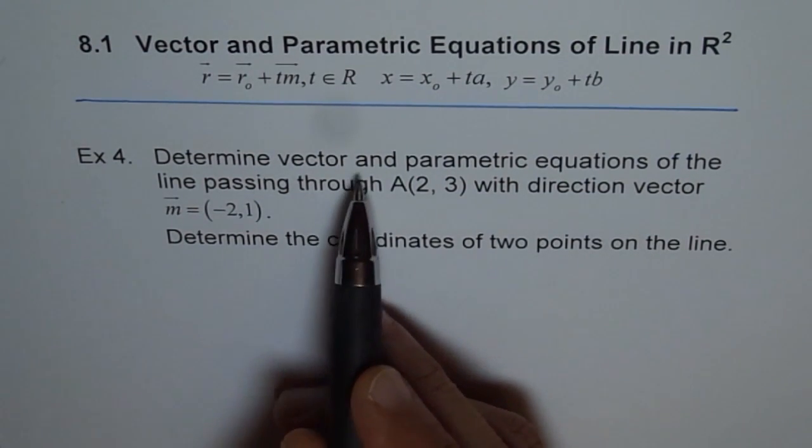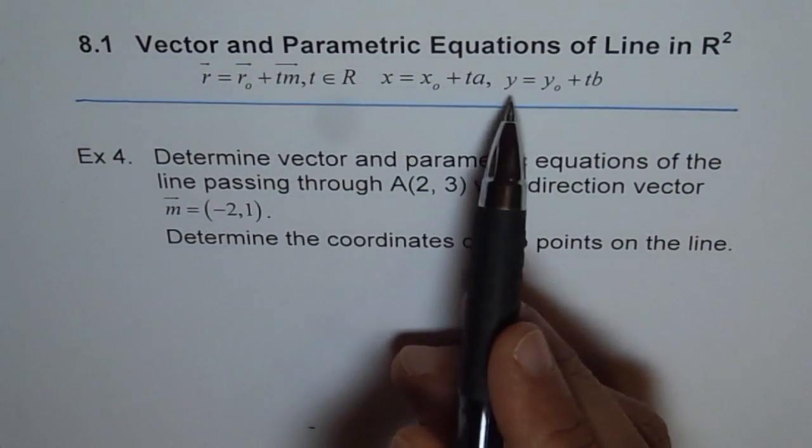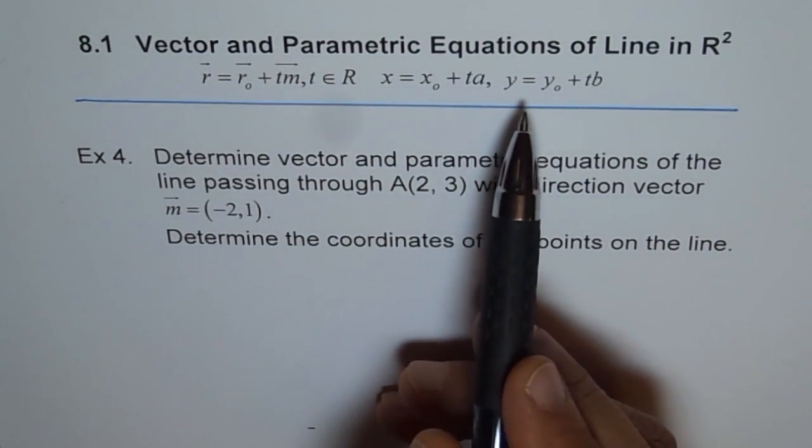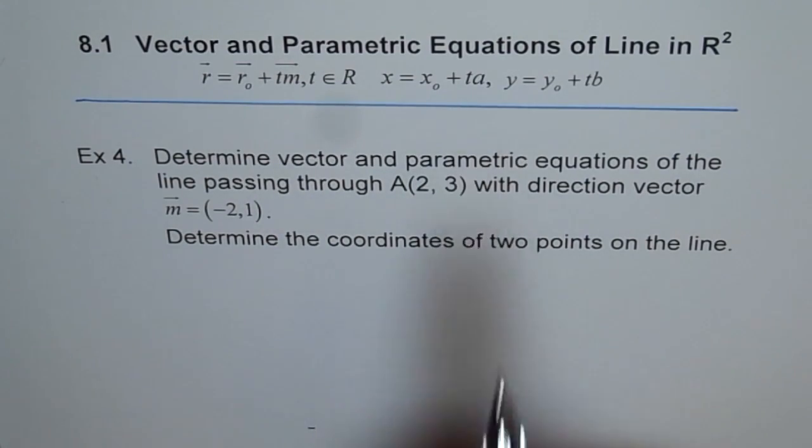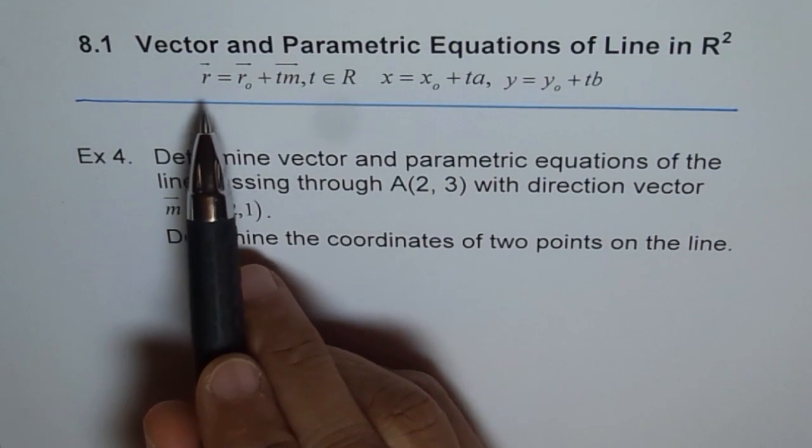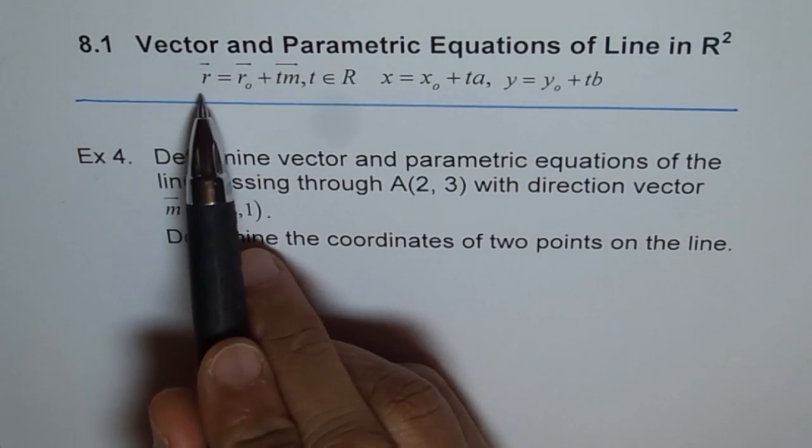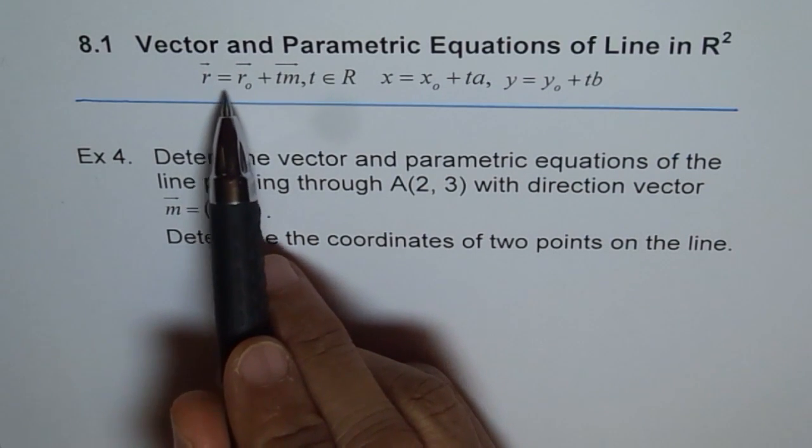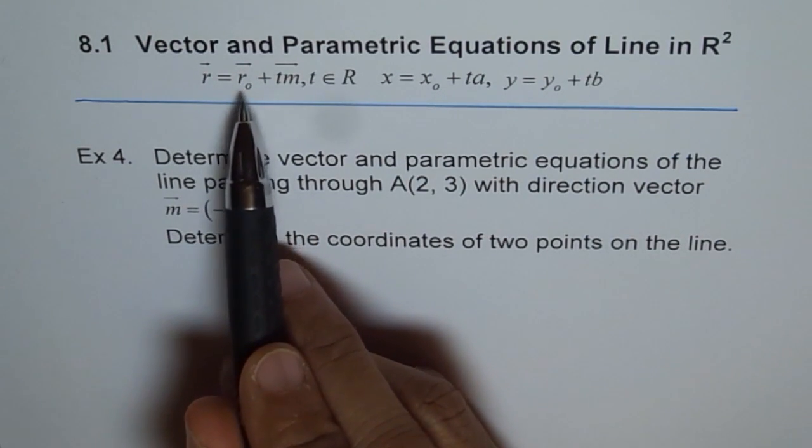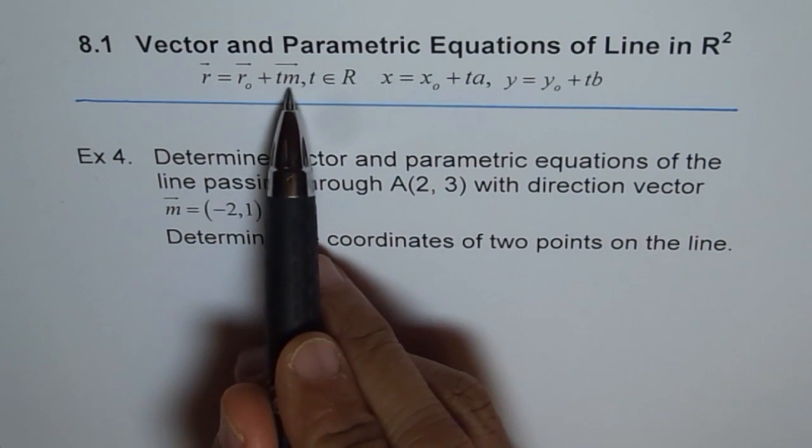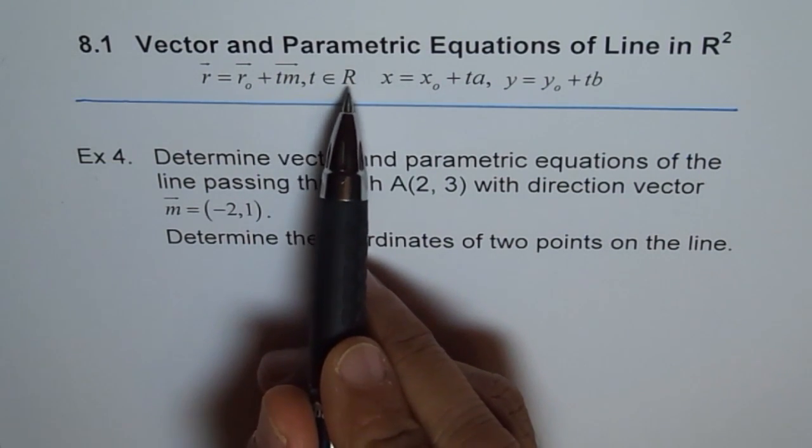So let's first write down the vector equation. Here on the top, I've given you both equations. The idea is that you get used to these new equations. Let's understand what vector equation is. Vector equation says that R, the vector representing the line, equals R₀, which is any given point on the line, plus T times direction vector M, where T belongs to real numbers.